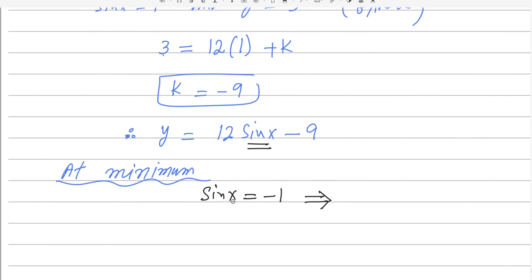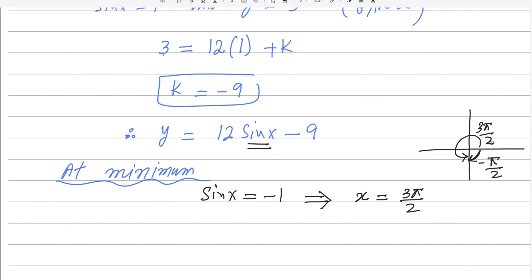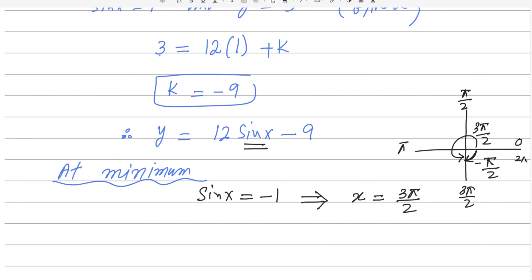sin x is minimum at minus 1 when x equals 270 degrees, which in radians is 3π/2. If you use a calculator it will give you negative π/2, which corresponds to measuring the angle clockwise. But angles are always measured anticlockwise, so this angle is 3π/2. Remembering the key radian values: 90° = π/2, 180° = π, 270° = 3π/2, and 360° = 2π. So the x-value here is 3π/2.